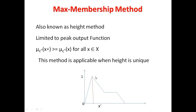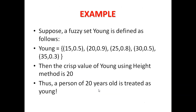This method is basically limited to the peak output function and is applicable only when the height is unique — meaning if there are two or three values at the same highest point, this method will not work. There should be only one unique height value, and whatever that value is, as we can see here at the highest point, the value of x* will be the crisp value returned.